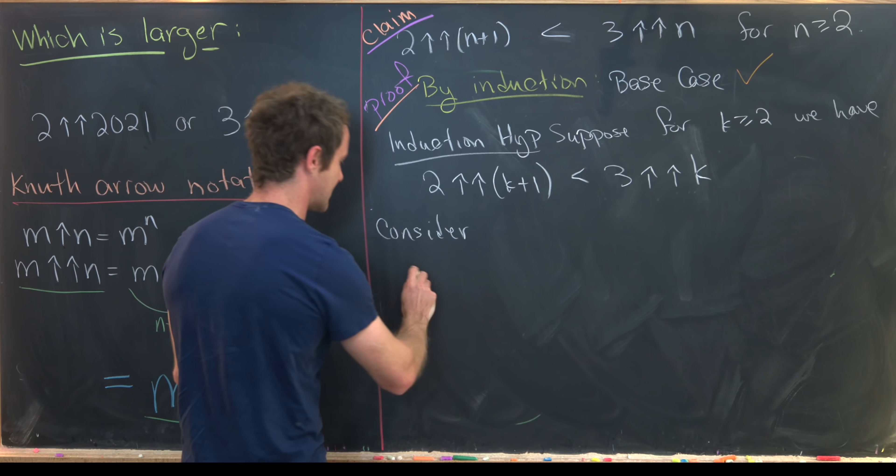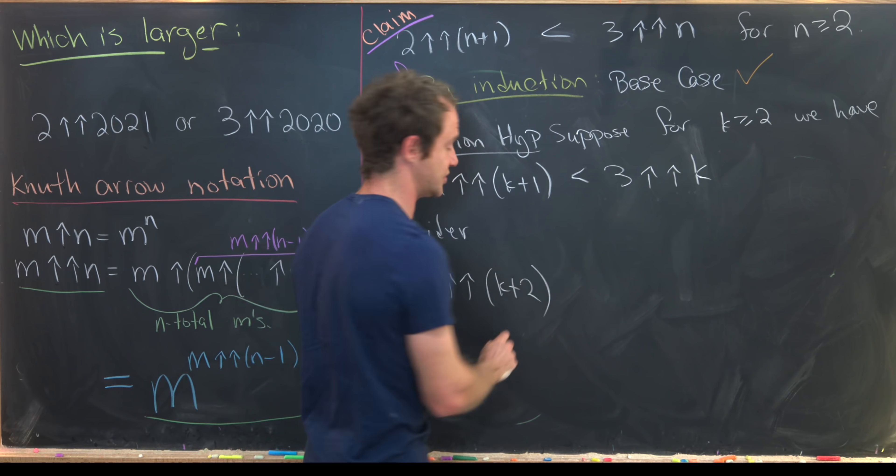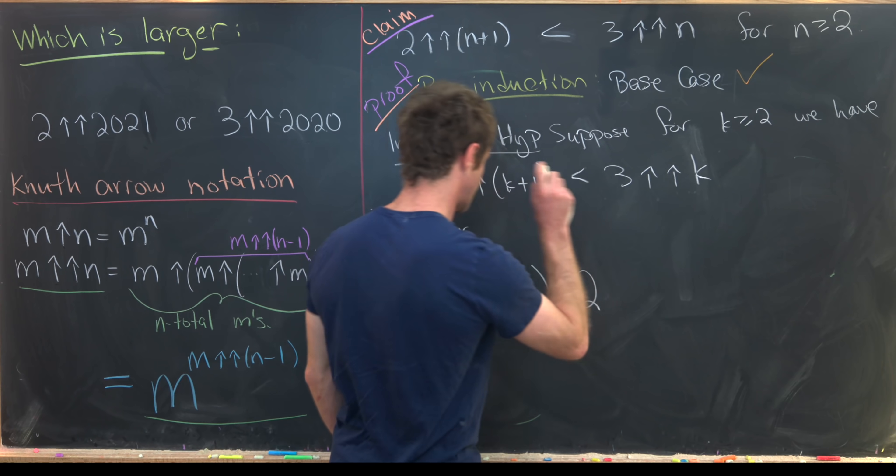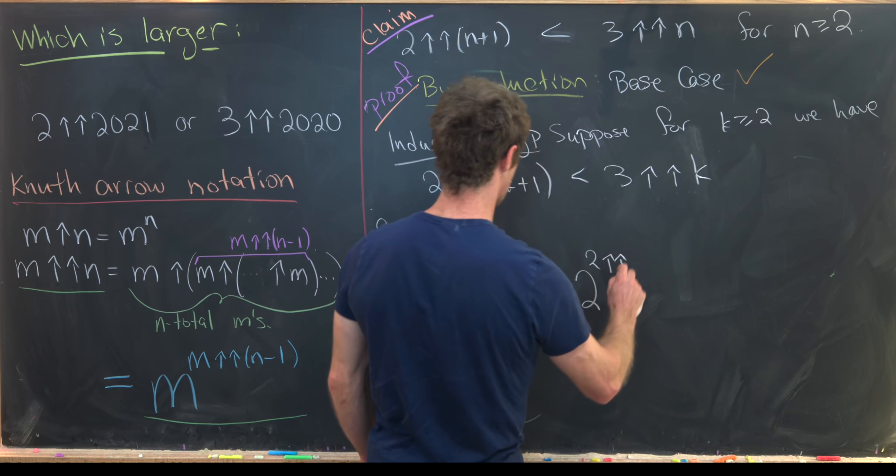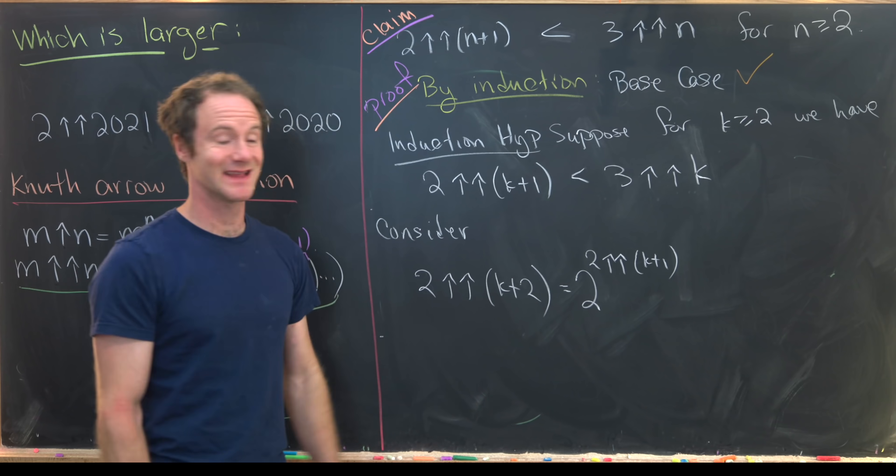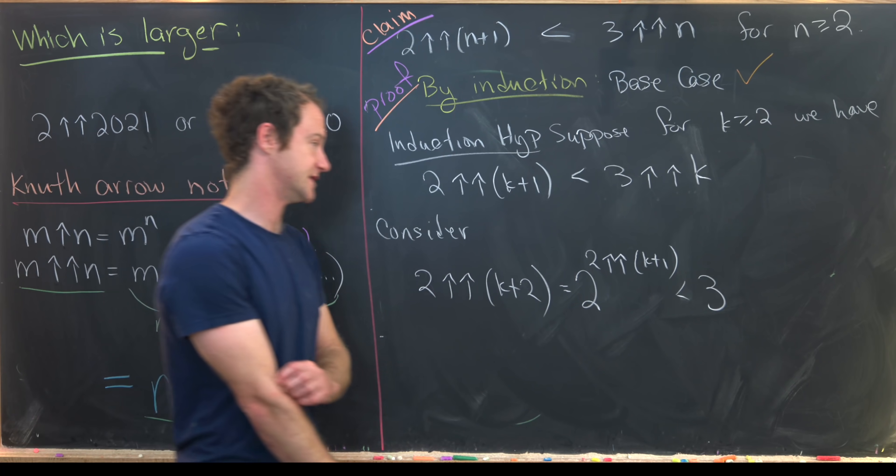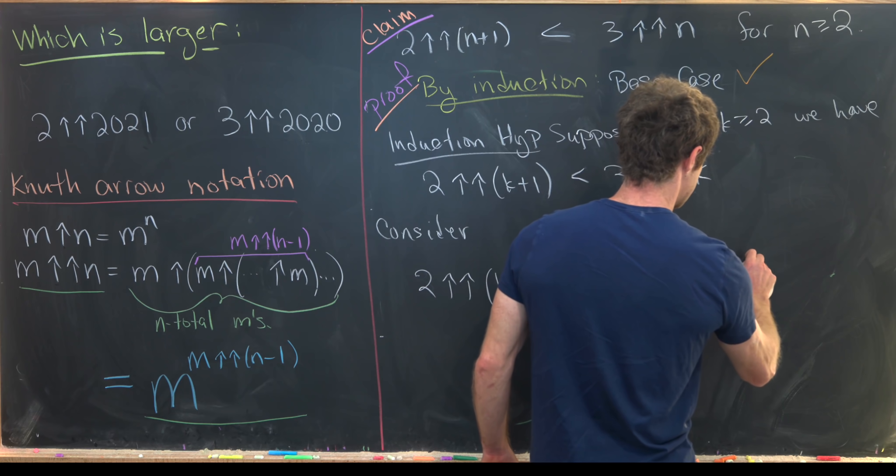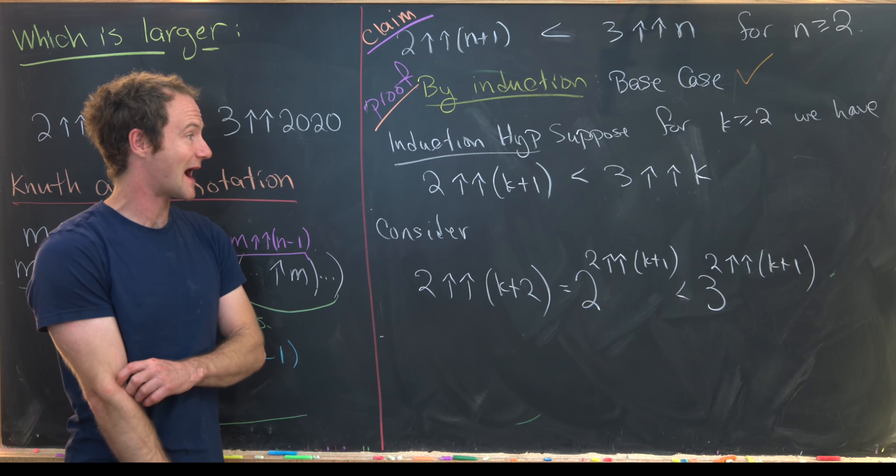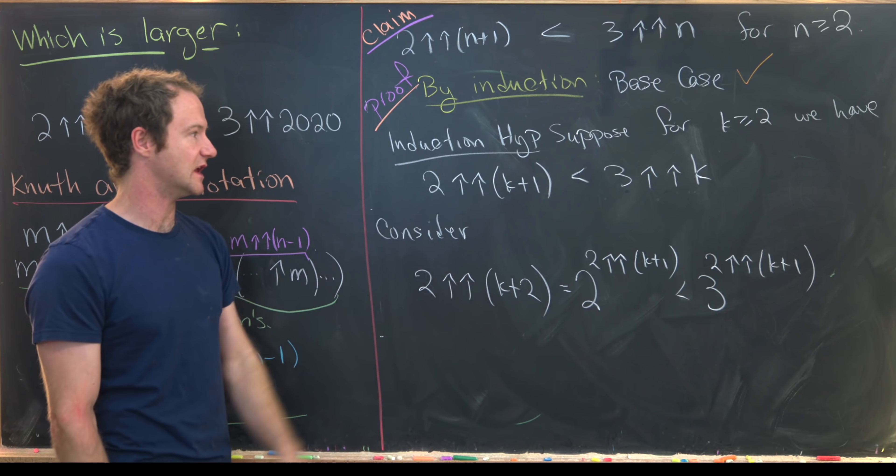And then from here we want to consider the next case. And so that next case will be 2 to the double up arrow k plus 2. Well let's notice by our recursive rule over here we have that's equal to 2 to the power of 2 double up arrow k plus 1. But 2 is less than 3 so we can replace the base with 3 and we'll create an inequality. So that's going to be less than 3 to the double up arrow k plus 1.